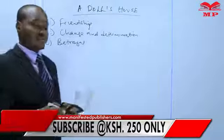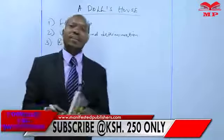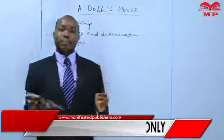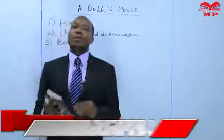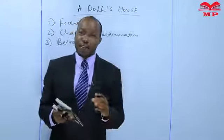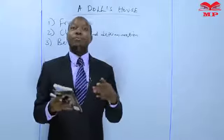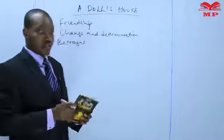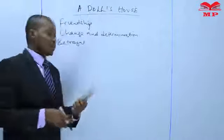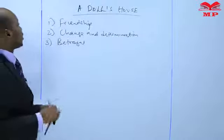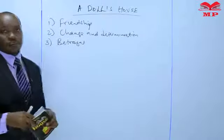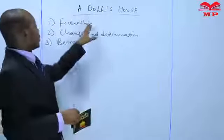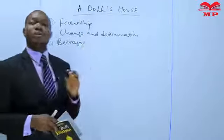A theme is an idea, a message about life that the writer puts forward. In this book, 'A Doll's House' by Henrik Ibsen, we are looking at friendship. Who is a friend? A friend is someone who stands with you.